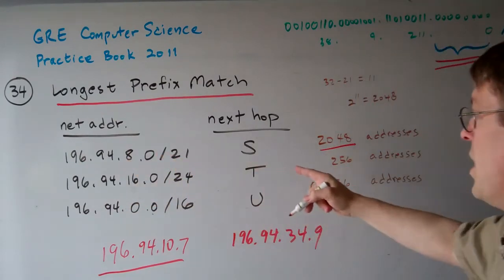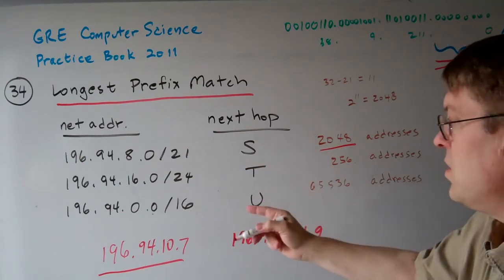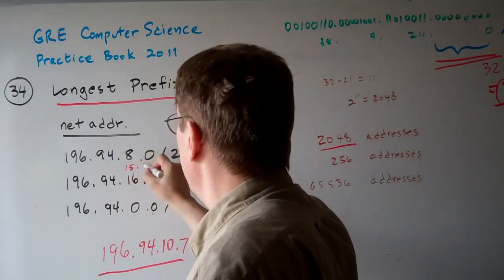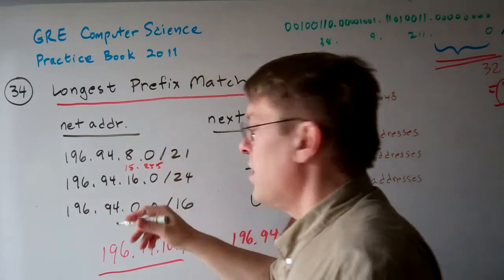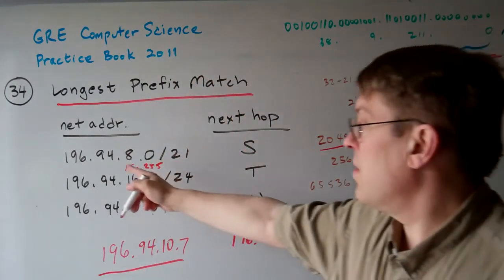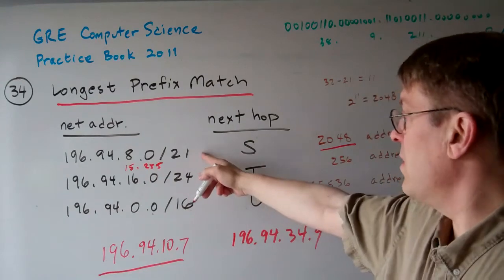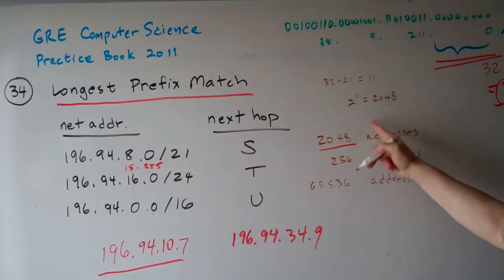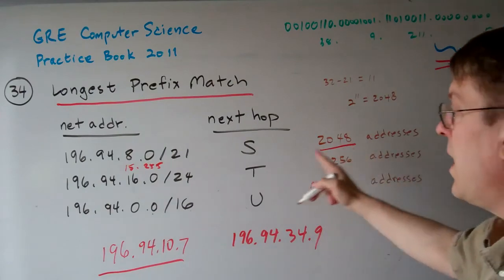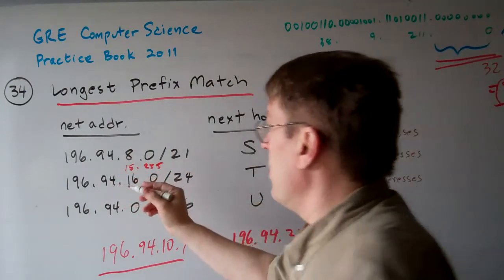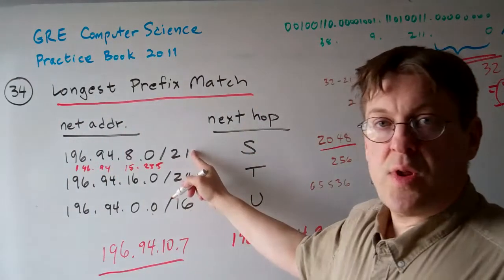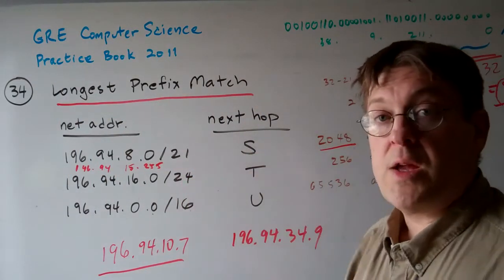It's going to be eight of these. So, this is going to go all the way to 15.255. That's that whole range from here to there. Because this one gives us 32 minus 21 is 11. 2 to the 11th is 2,048. 2,048 addresses. So, this range here is 196.94. This slash 21 is a shorthand for giving that range.